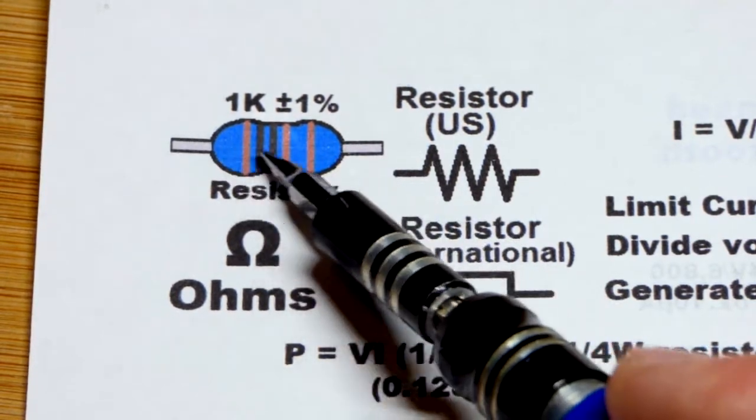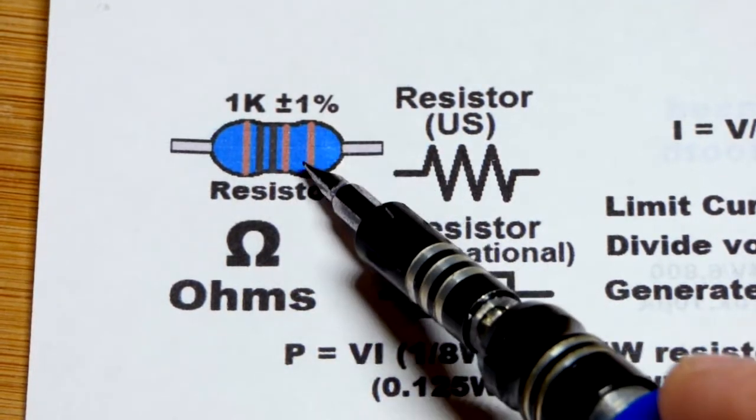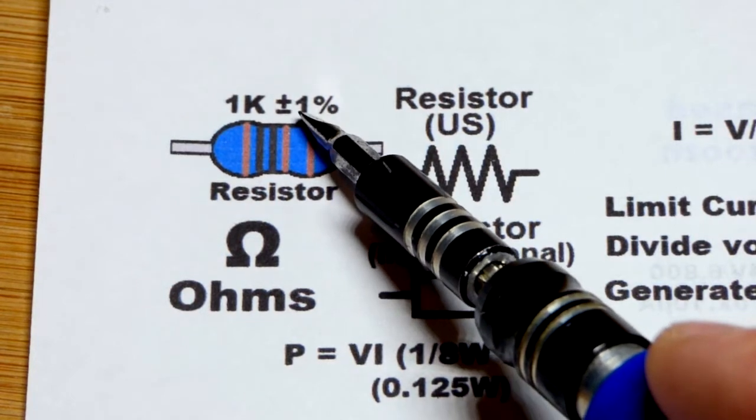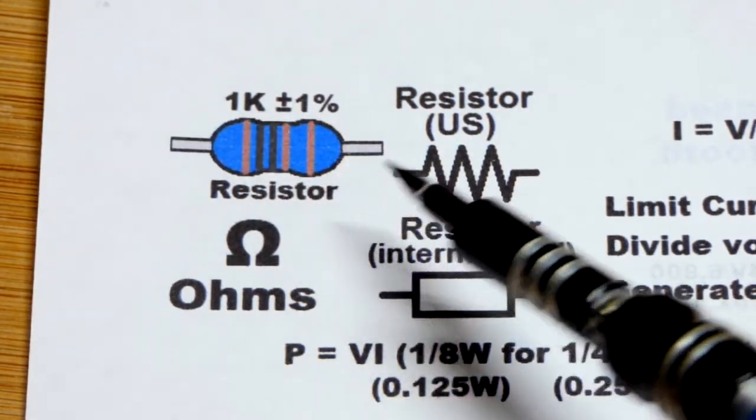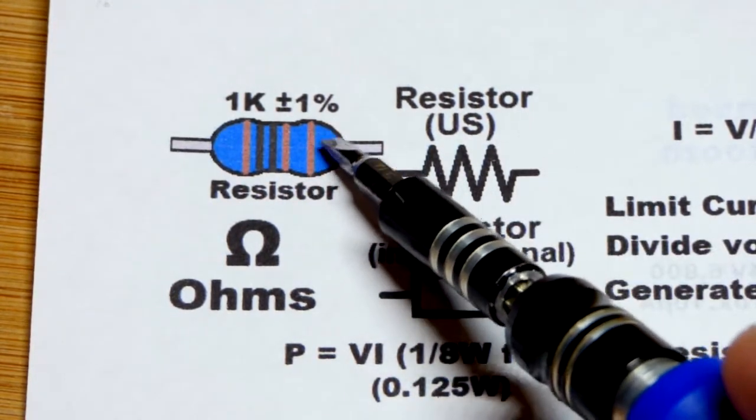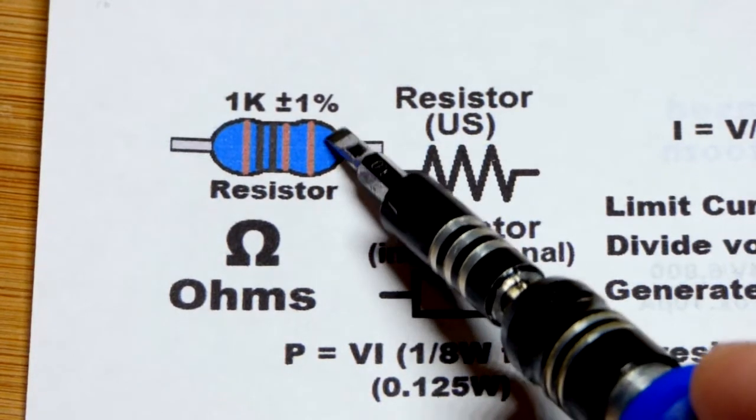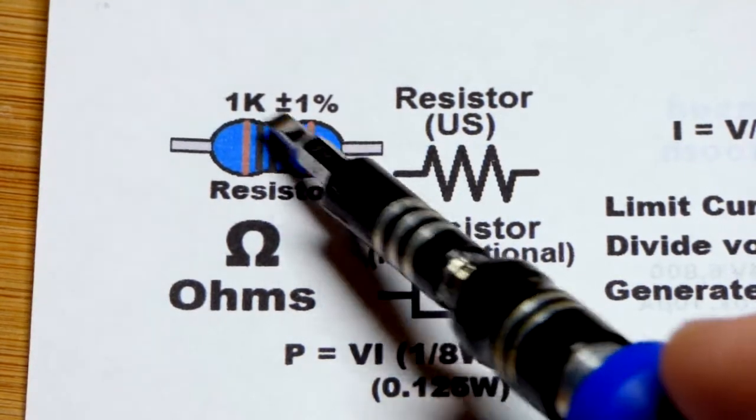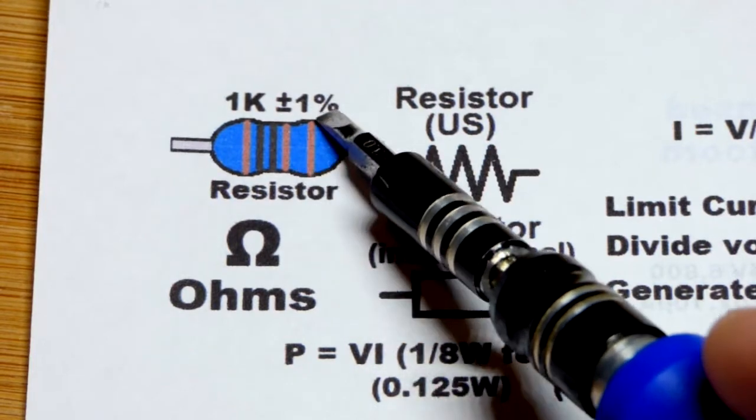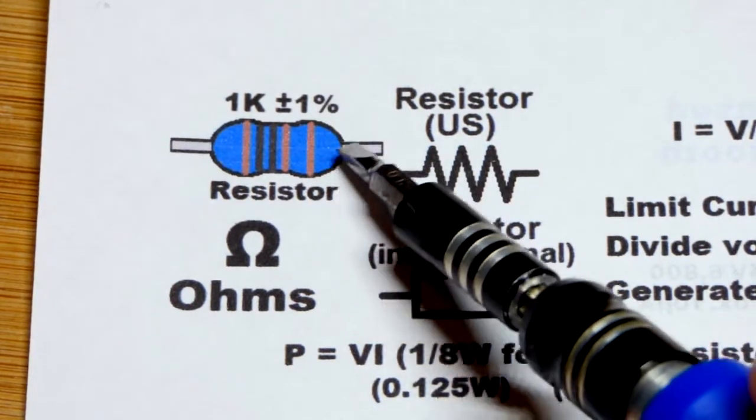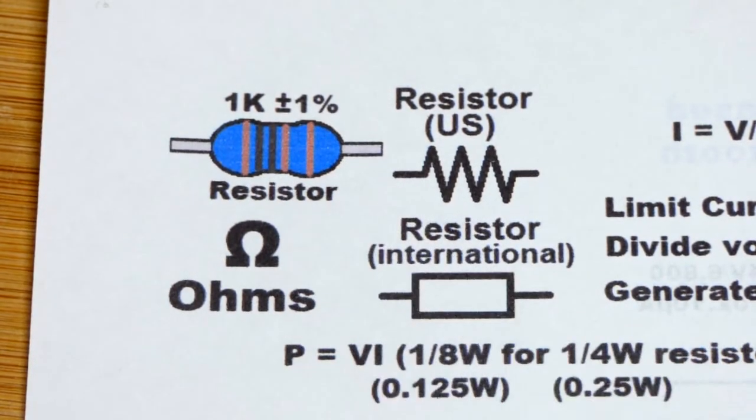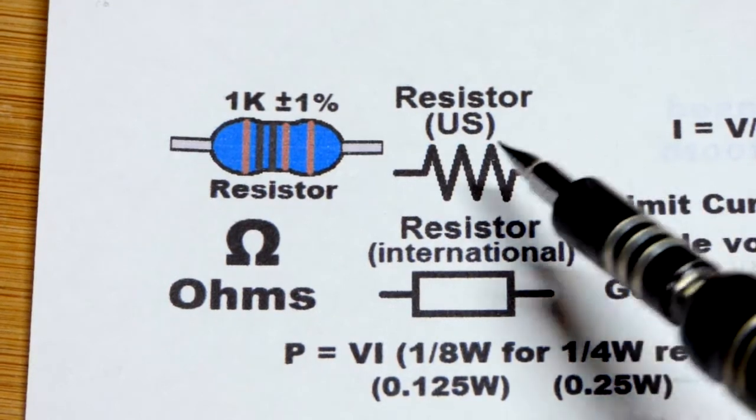Probably going to be a blue body with five bands, four for the value, one for the tolerance. That's a percentage higher or lower than it can be from its actual value. You learn about that when you learn the color code, but there's also beige body ones with three bands for the value and one band for the tolerance, usually gold for five percent. Most are these blue ones with five bands.